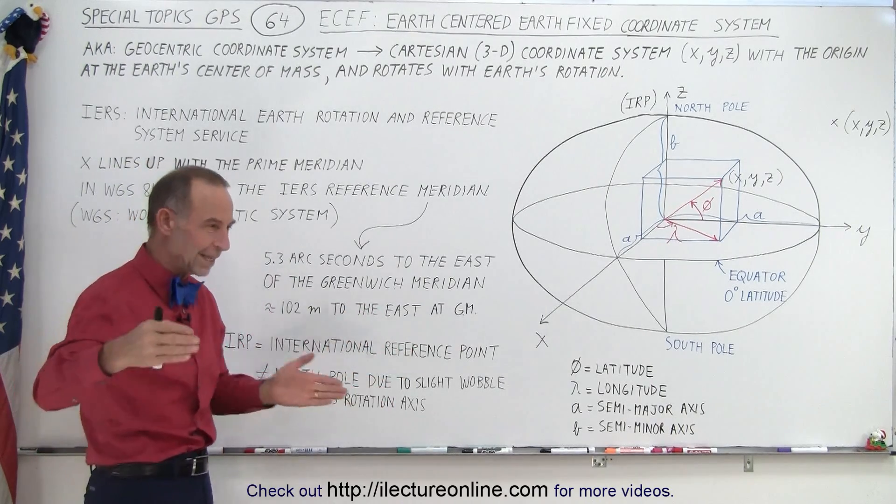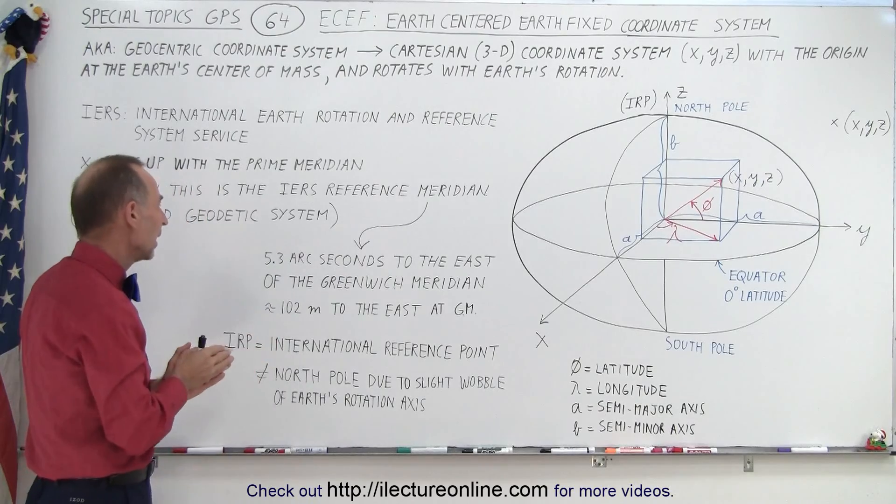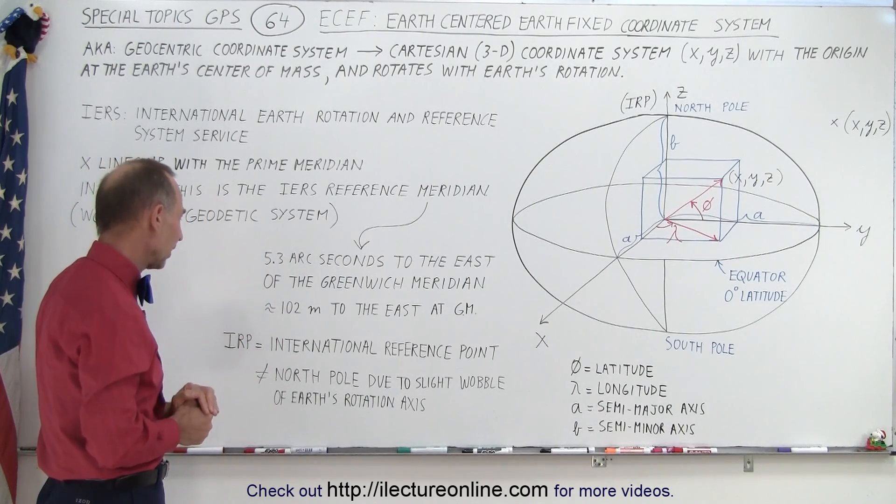At the latitude of Greenwich, that's about 102 meters to the east. So about a football field length to the east of where it used to be at that location, it's an angle of 5.3 arc seconds.